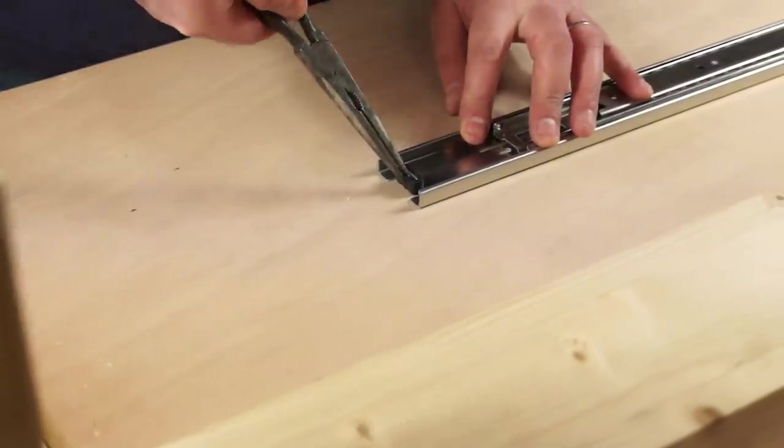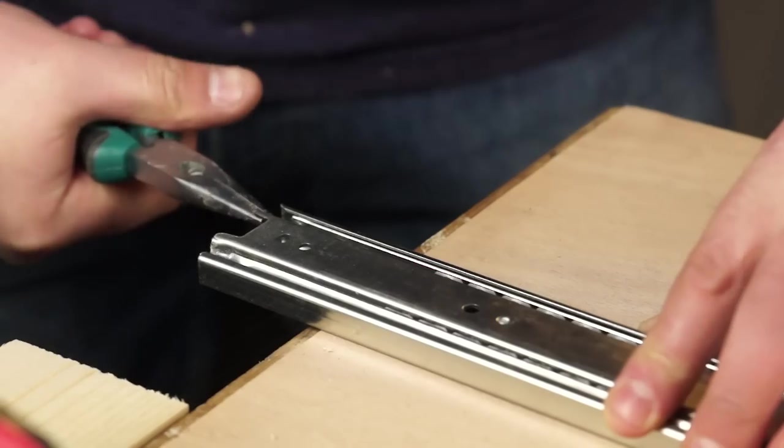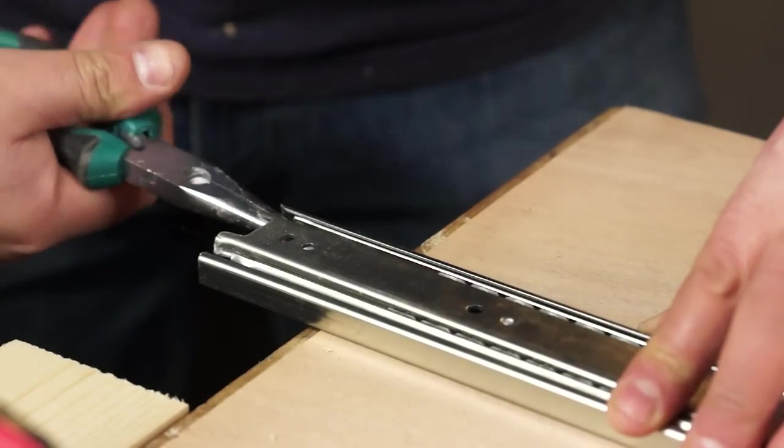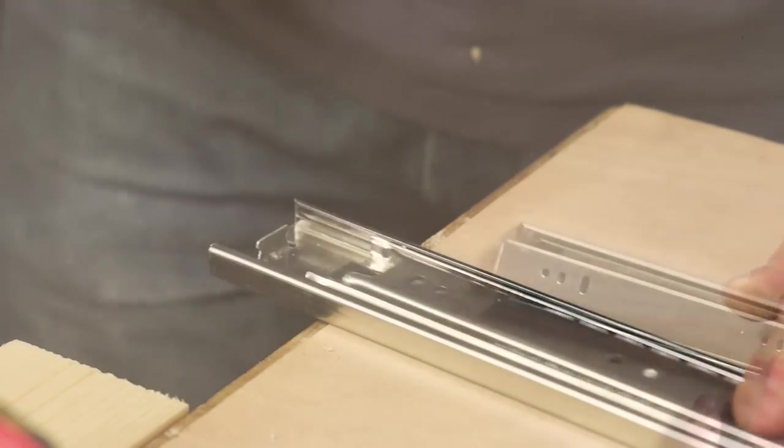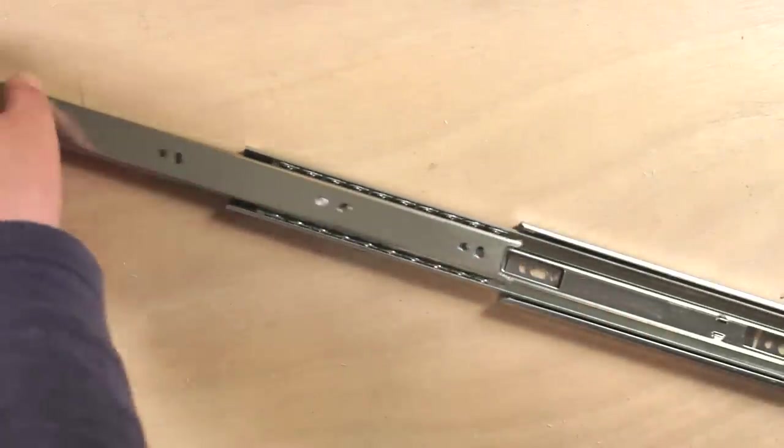Before fitting the drawer slide I need to remove the rubber latch. This would normally keep a drawer closed inside a cabinet. And also because I'm using the slider vertically I need to bend out one of the ends to trap the middle bearing race and prevent it from escaping.